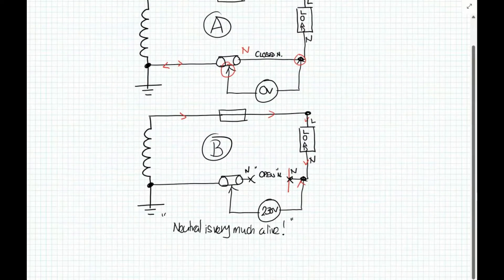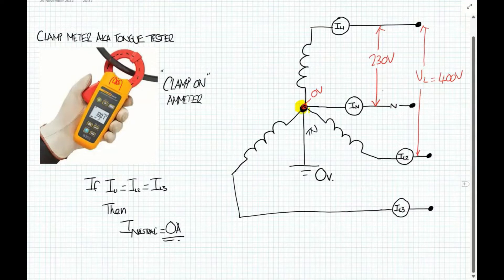Back to our star system. If all of these loads, if we were to pull IL1, line current one, line current two, line current three, if they're all exactly the same then there would be nothing, no neutral current, it would be zero amps in the neutral.